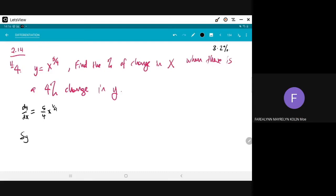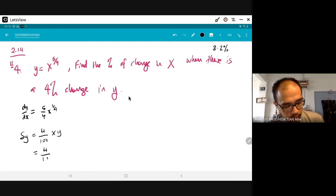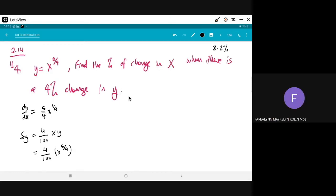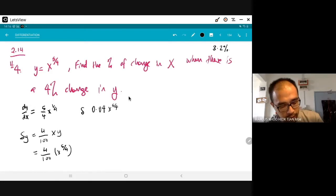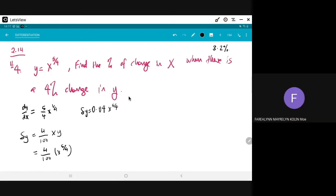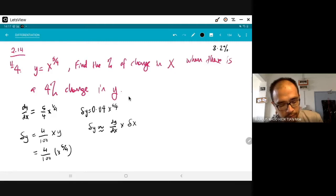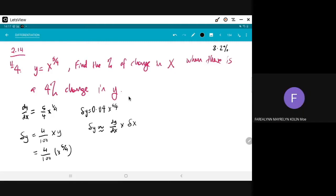And then, find delta y. Okay. So, that's why 4 over 100 times y. Okay. So, the y equation, substitute. Oh, okay. 4 over 100 times x to the power of 5 over 4. Yeah. Okay. Then, I get 0.04 x to the power of 5 over 4. Okay. This is del y.